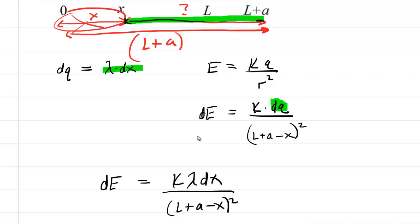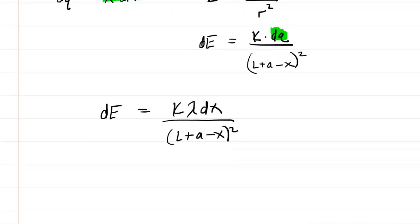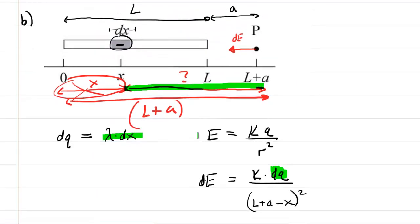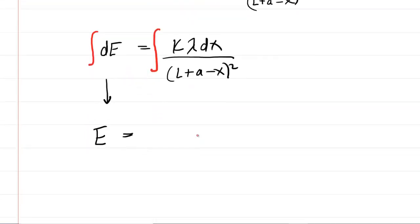This expression only gives us the electric field for that single differential element. We need the total electric field across the whole rod, so calculus comes to the rescue. To get the total electric field, you integrate the equation you developed. When you integrate dE, you get the electric field magnitude. For the bounds, the rod was bounded on the left side by zero and on the right side by L, so the bounds will be from zero to L. K and lambda are both constants, so we factor them outside of the integral.